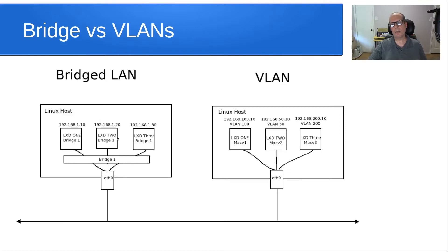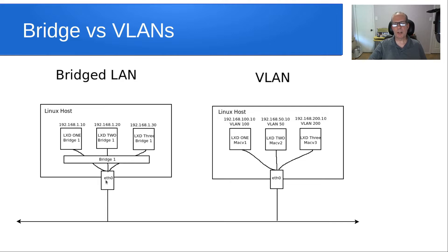Here's a picture of a LAN with two Linux hosts on it. The Linux host on the left only has bridged LXD containers on it, and the host on the right only has Mac VLAN containers. You could have combined bridge and Mac VLAN containers on the same host, but for clarity they're divided here. On the left we have 192.168.1.10, 1.20, and 1.30, which are three LXD containers bridged through a common bridge, going through one Ethernet interface, all in the same address range.